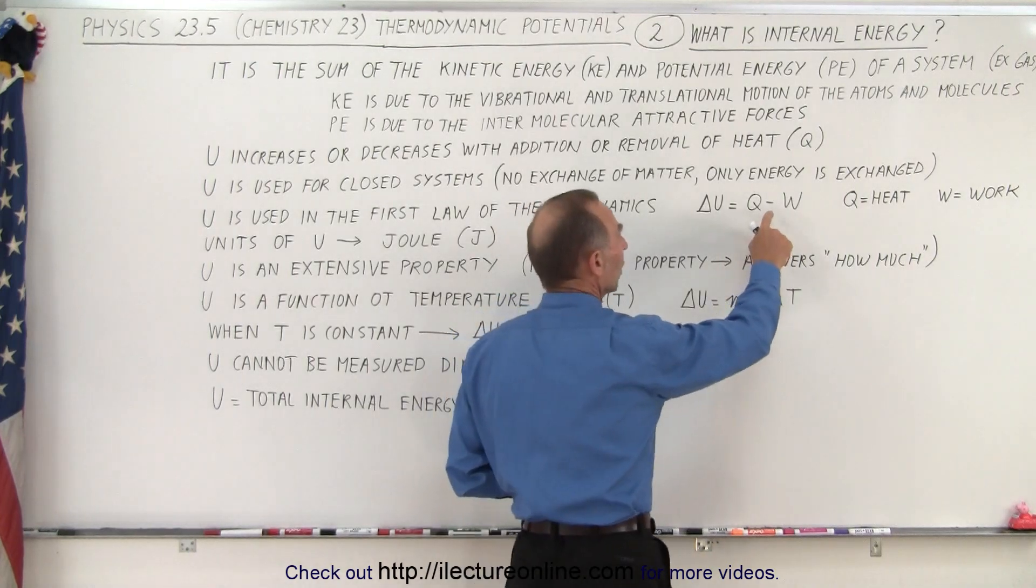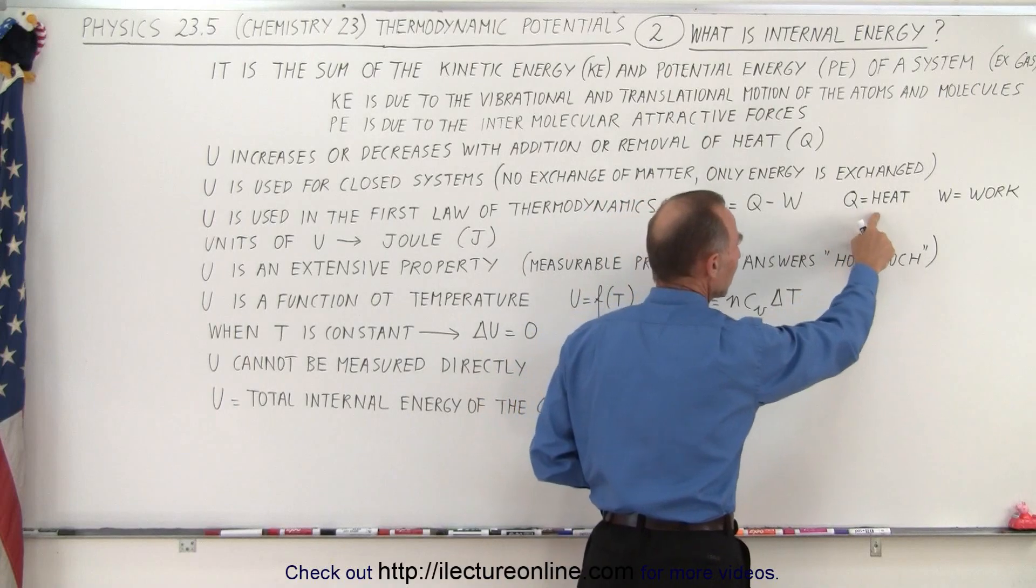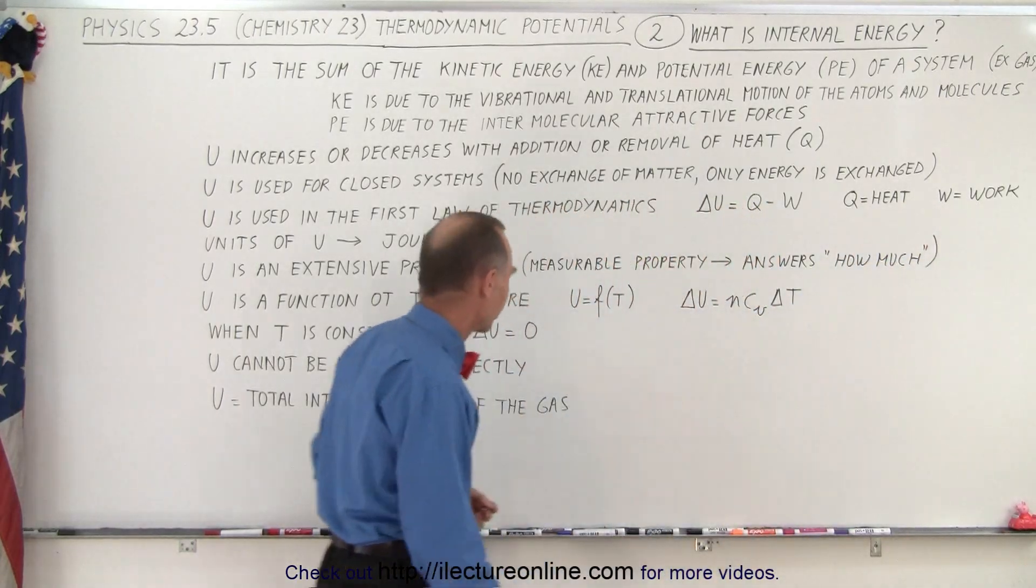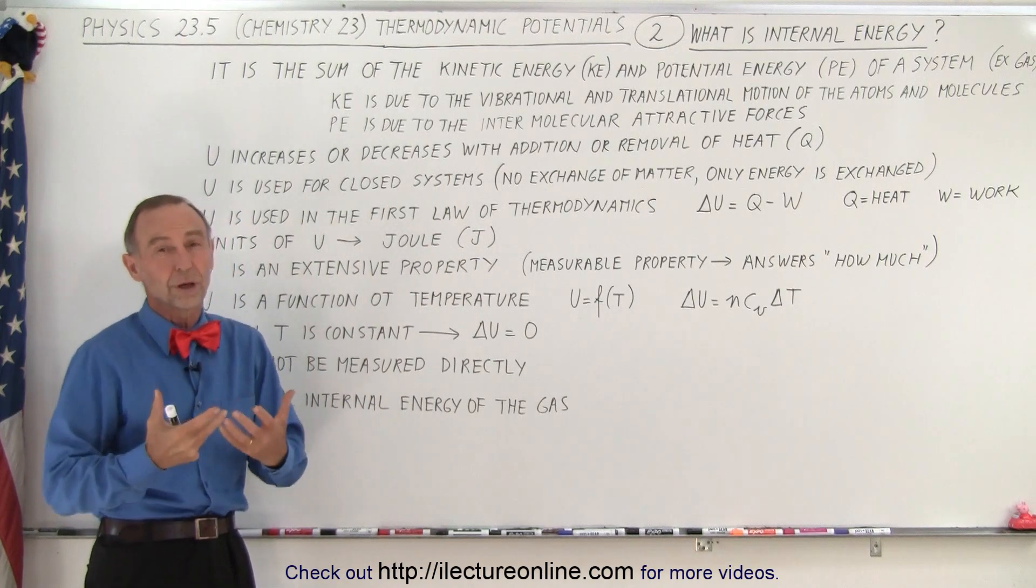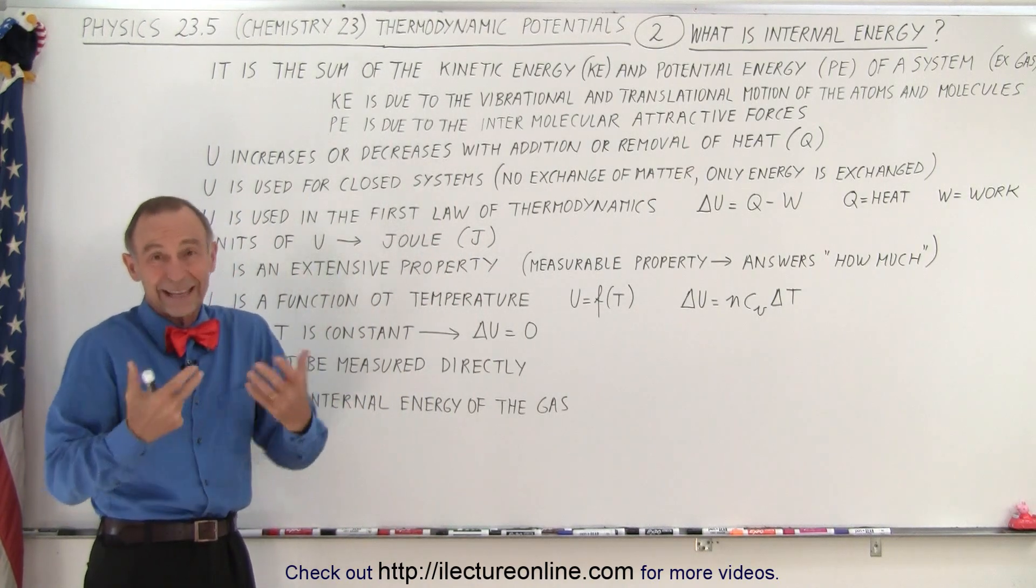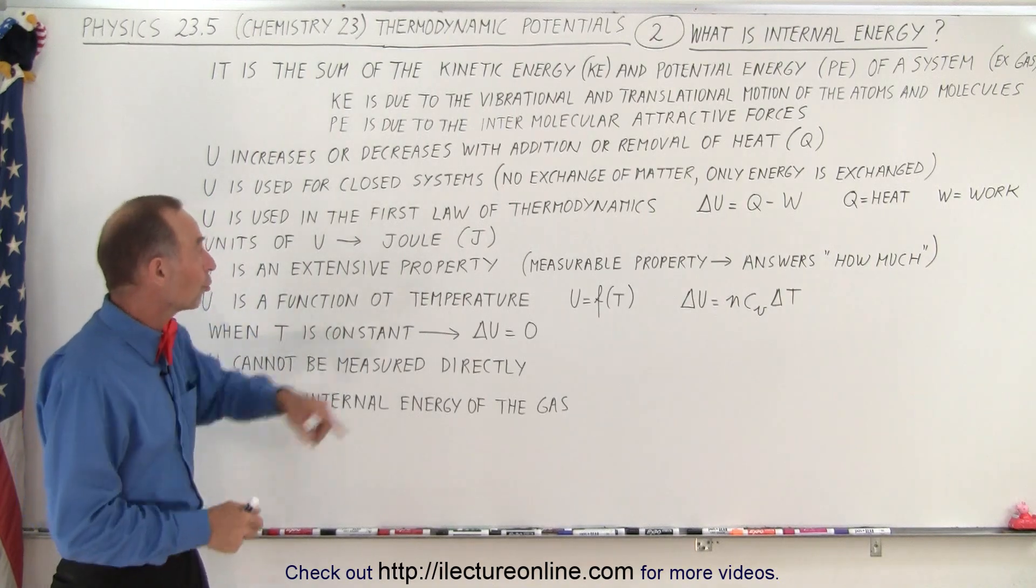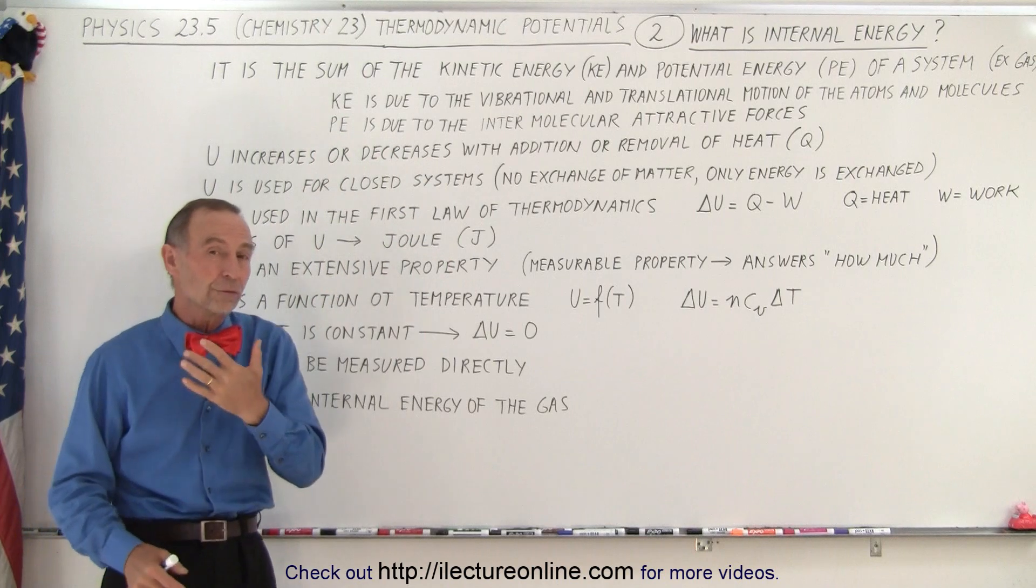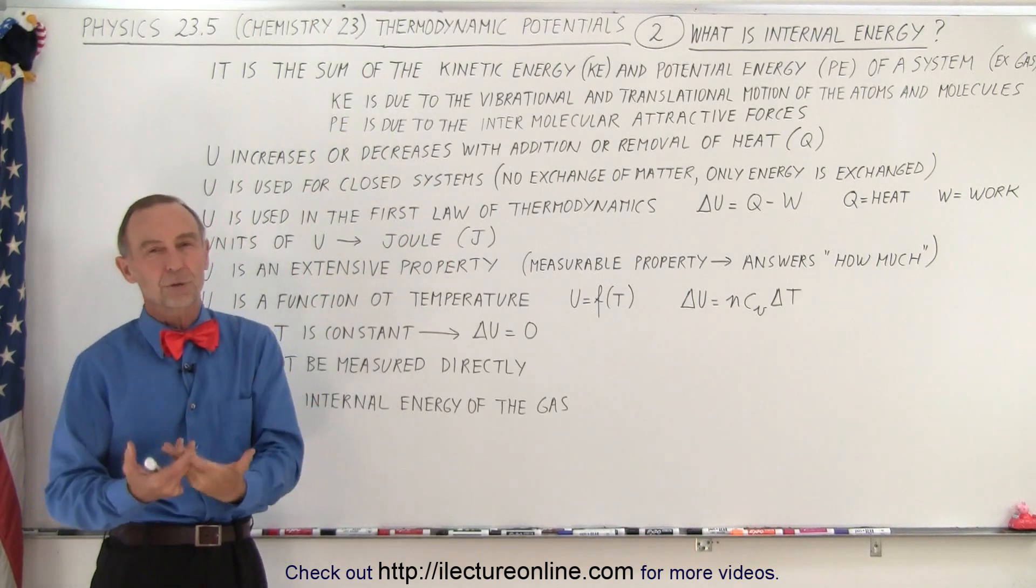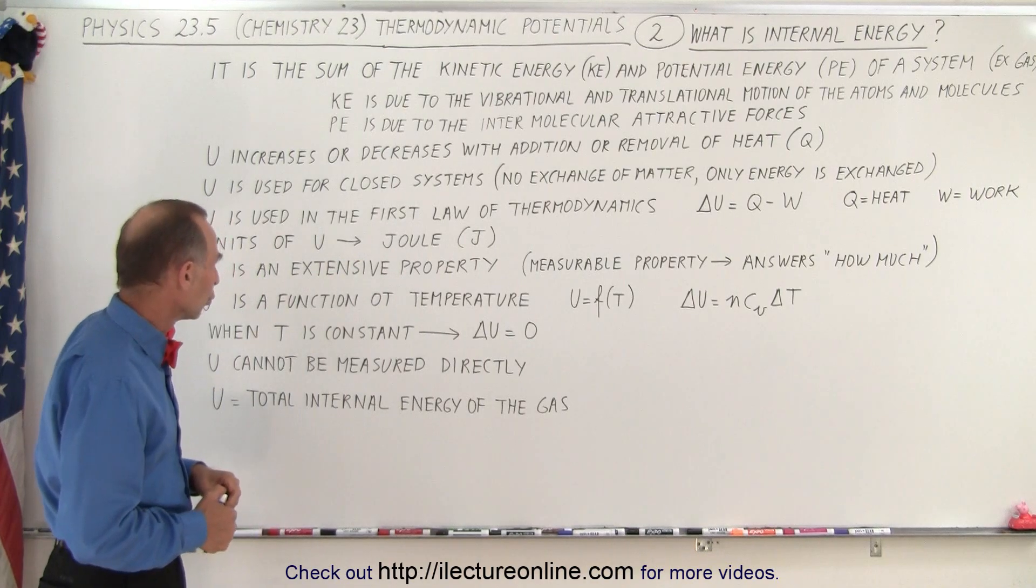Notice that we use the words work done by the gas. Remember Q is heat and W stands for work. The units that we use for internal energy are joules because internal energy, well it's energy, and anytime we use energy or work we use joules. So joules is used for kinetic energy, it's used for potential energy, it's used for work, and so therefore internal energy also uses the unit joules.